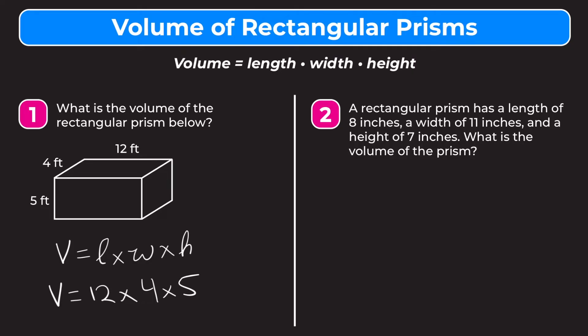So let's go ahead and multiply these together. So we have our volume. I like to separate it out and do two numbers first and then multiply the last one. So I would do 12 times 4. That's going to be 48 times 5. And 48 times 5 equals 240.